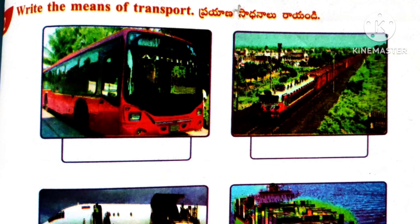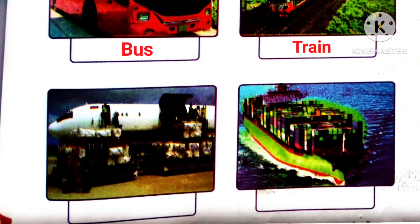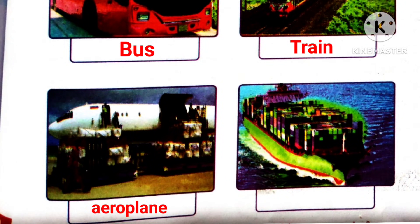Number 2. Write the means of transport. First picture: Bus. Next one: Train. Next one: Aeroplane. Next one: Ship.